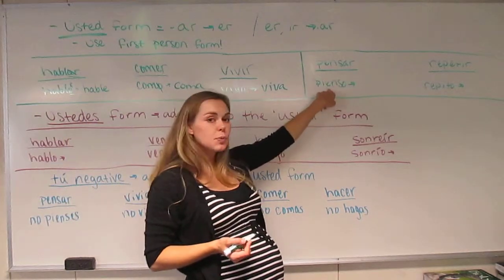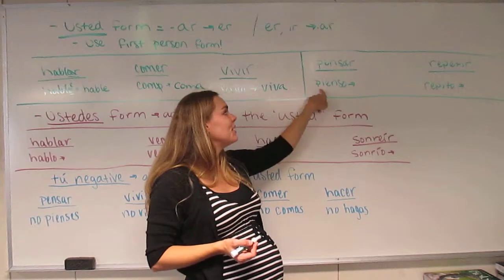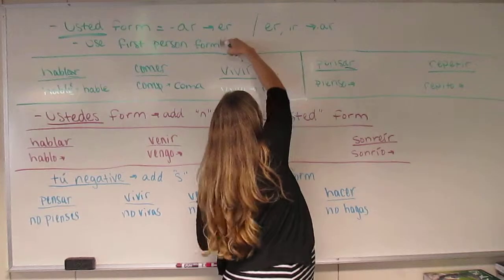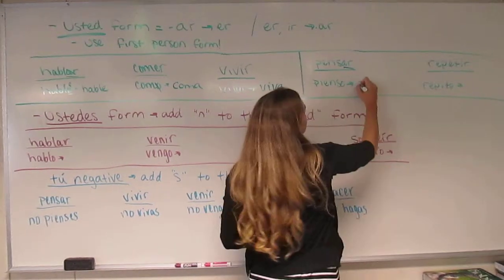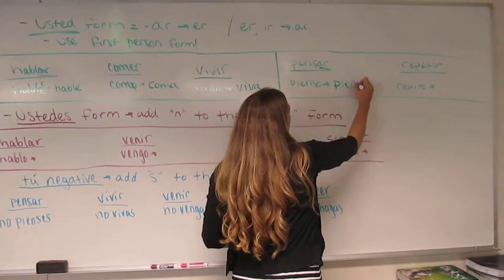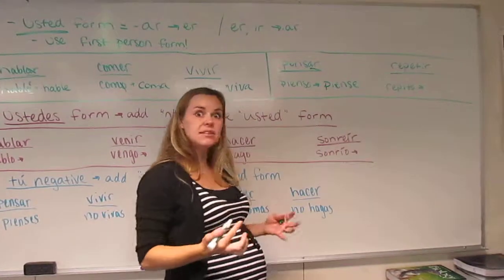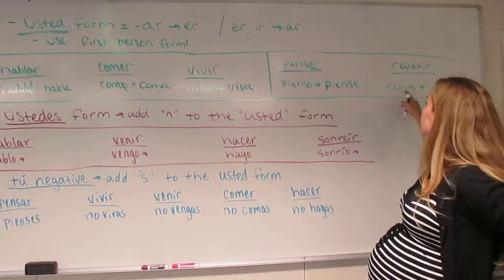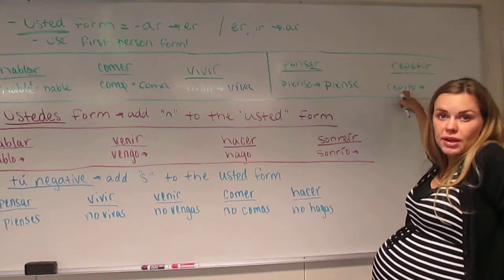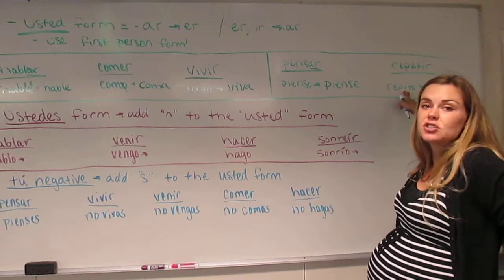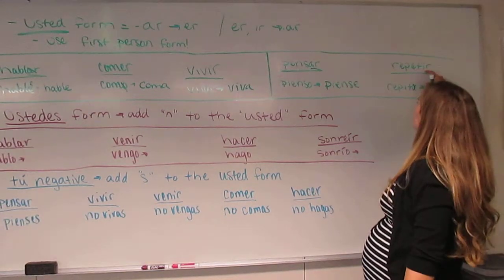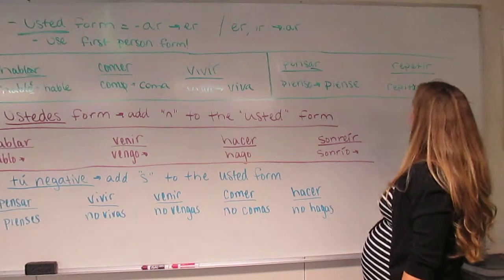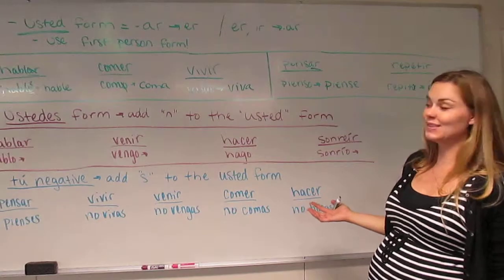Pensar. The first person conjugation would be pienso. So we change the AR so that it becomes ER. And now it is piense. Piense. Repito comes from repetir. This is irregular. It will have its irregular stem change in the first person. We chop off the O, we substitute it for A, and now we've got repita. Easy, right? I know you think so.